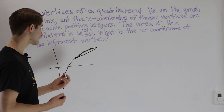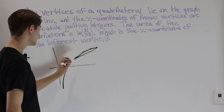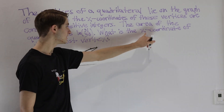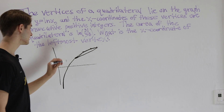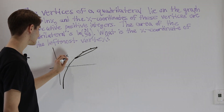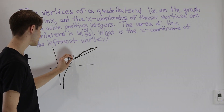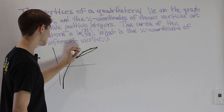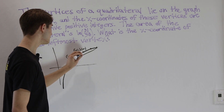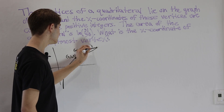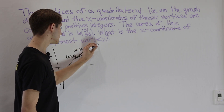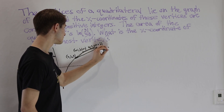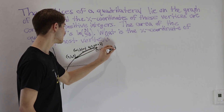Each of these points is going to have some coordinates. Let's call the leftmost x-coordinate n, since we're trying to figure out that x-coordinate of the leftmost vertex. So the first point is (n, ln n), then (n+1, ln(n+1)), then (n+2, ln(n+2)), and finally (n+3, ln(n+3)).